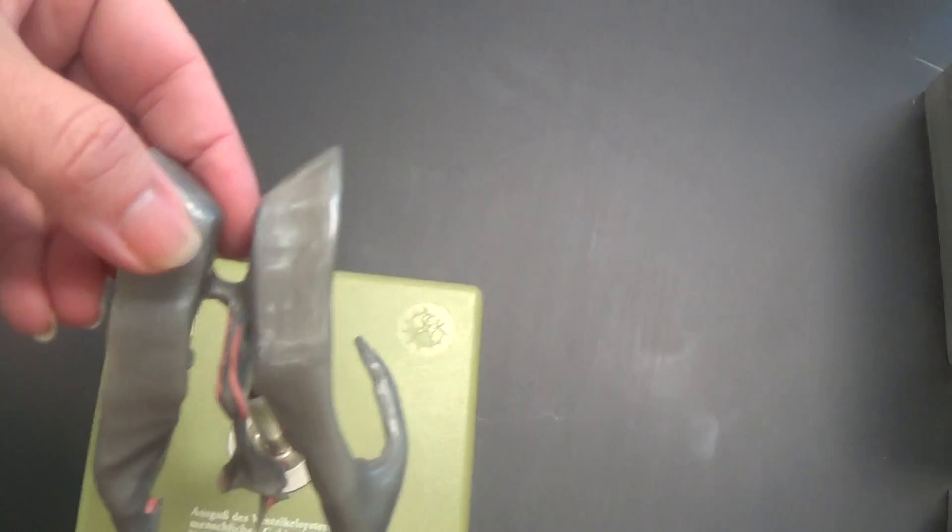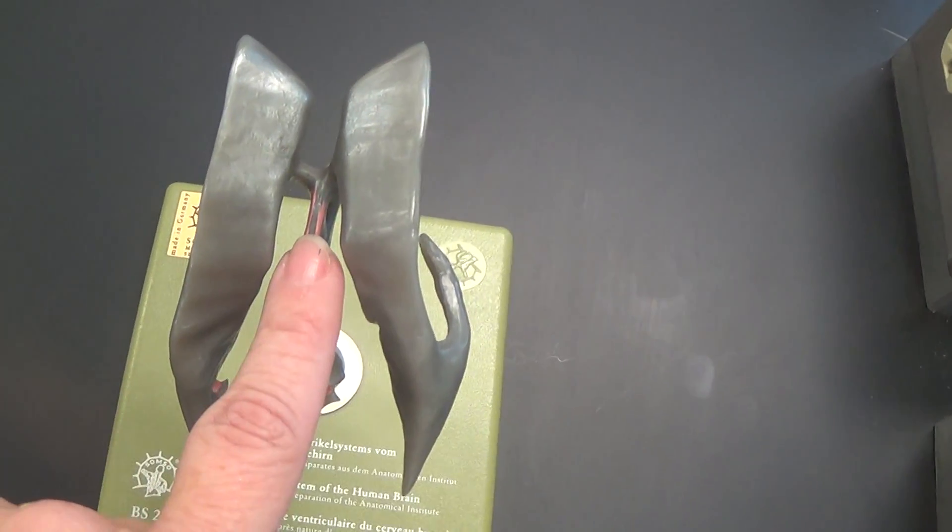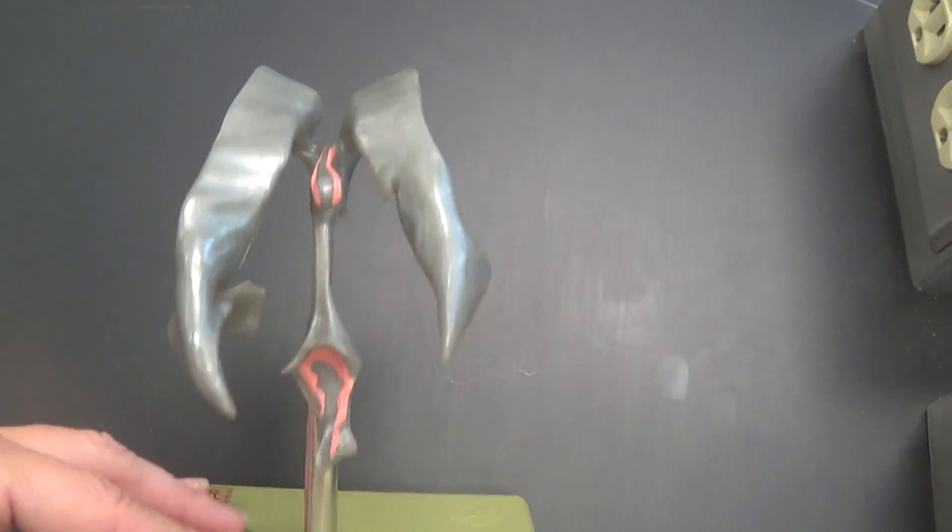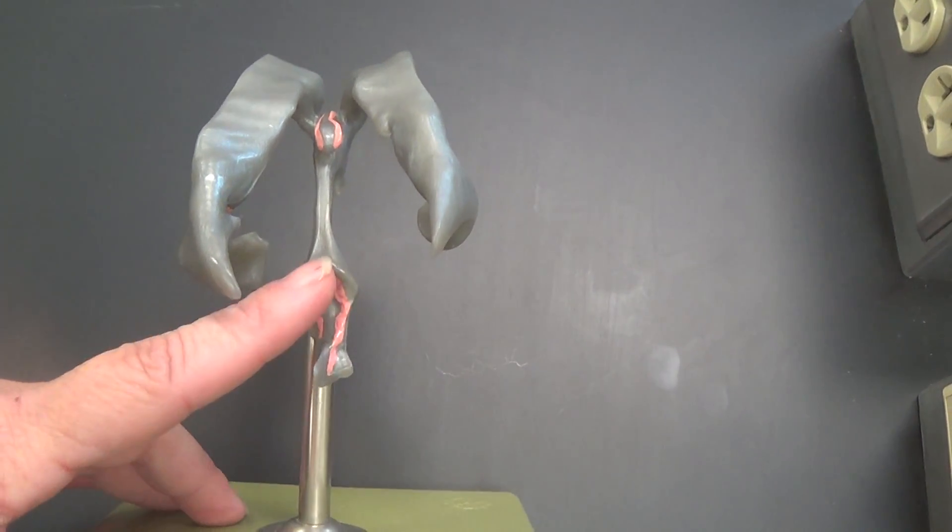In between those two, we have the third ventricle right here with this pink stuff on top. And then down at the bottom here, right here we have the fourth ventricle.